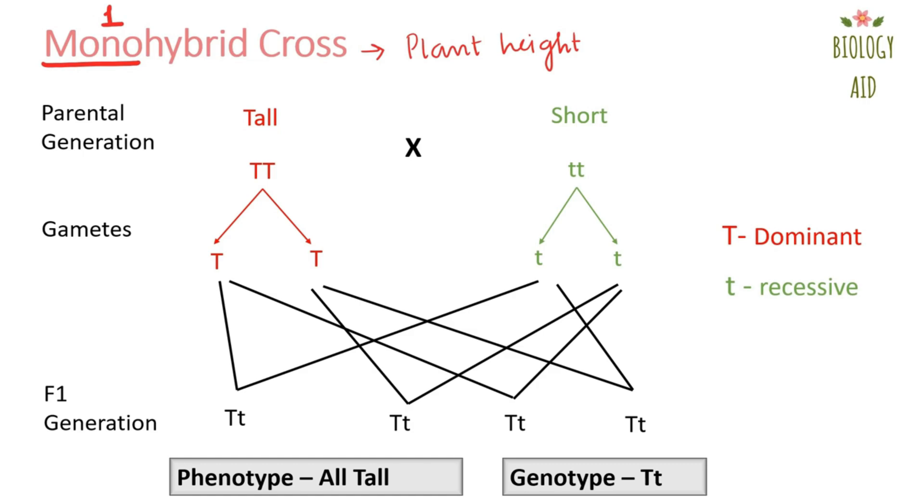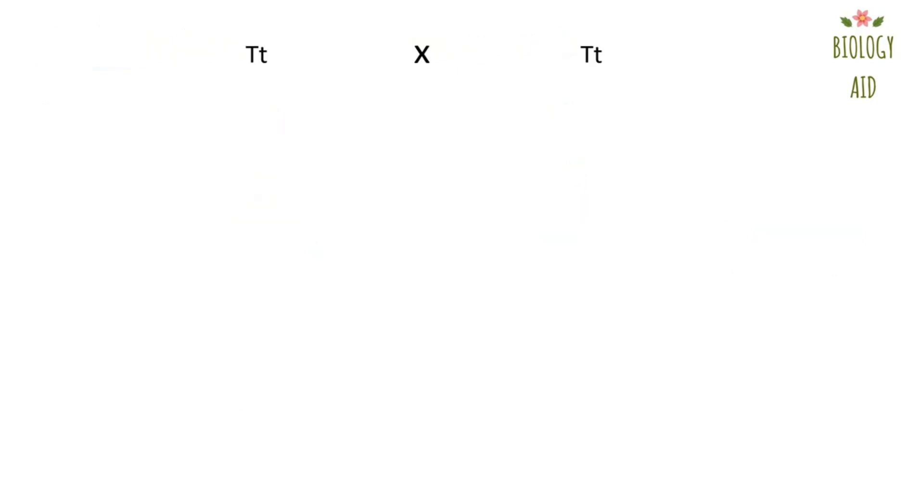What Mendel did next is he took two plants from F1 generation and fused them together. That is capital T small t fused with capital T small t. Now, what will be the genetic composition of the gametes formed this time? One will be capital T and the other will be small t. Similarly, the gametes formed in the other plant as well will be capital T and small t. Now, these gametes will fuse and form F2 generation or second filial generation.